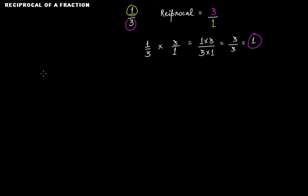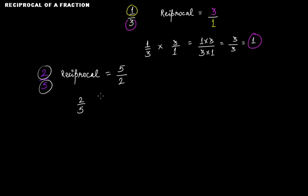Let's take another example. Let's say we have 2 over 5. The reciprocal of 2 over 5 — the denominator is 5, so make it the numerator, and the numerator is 2, so make it the denominator. The reciprocal of 2 over 5 is 5 over 2. If you multiply them, you get 2 times 5 divided by 5 times 2.